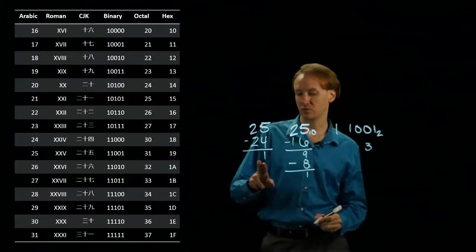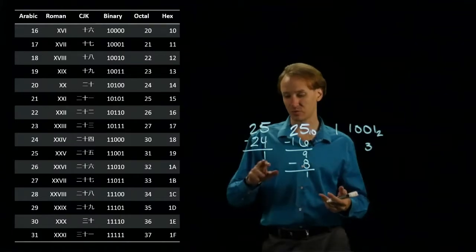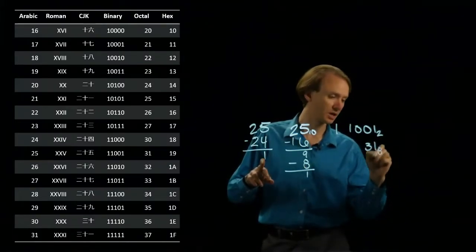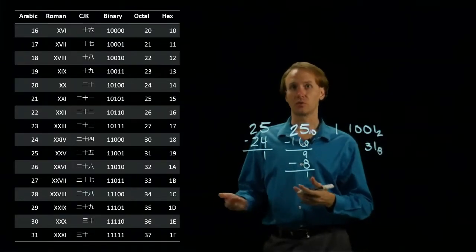Then I've got 1 left over, so 1 times 8 to the 0th would give me 1, so I'll put a 1 in here. And I get 31 for my octal number, which is, again, what we expected.